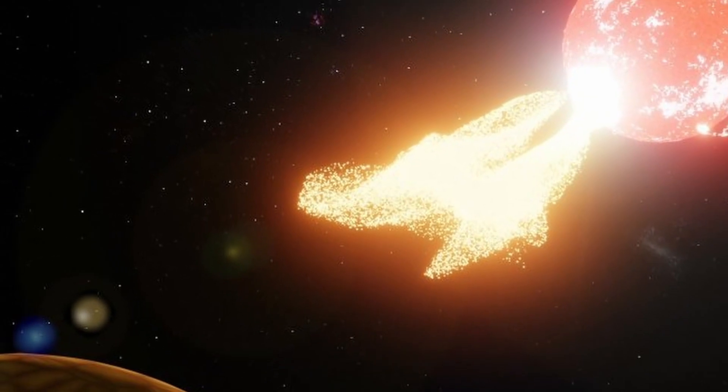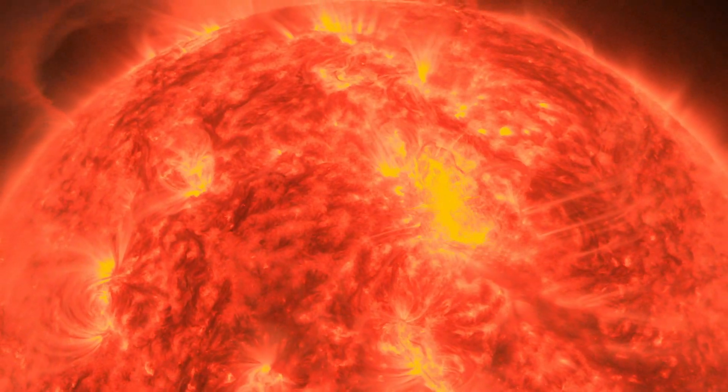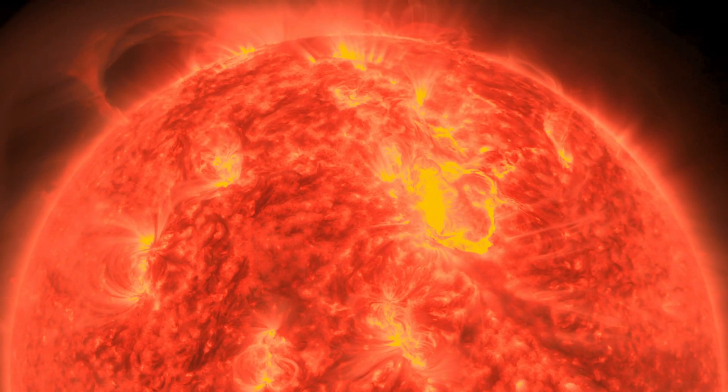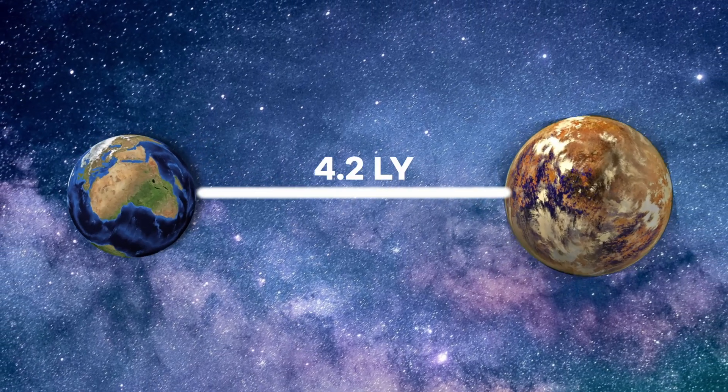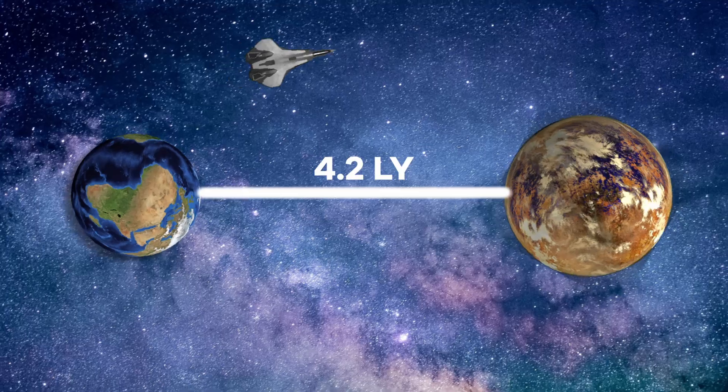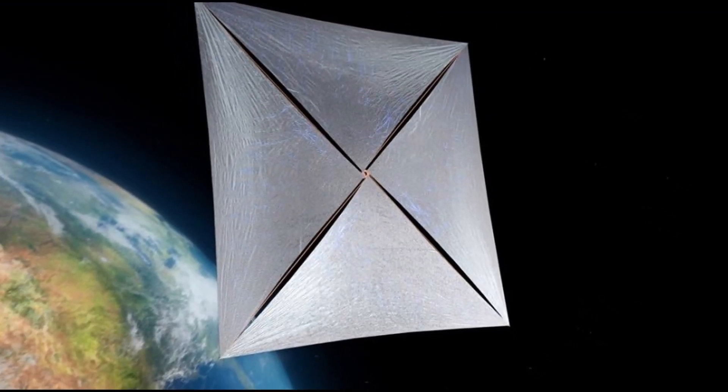Proxima Centauri is a flare star, emitting intense electromagnetic radiation that could potentially strip away an atmosphere from the planet. The proximity of Proxima b to Earth presents an opportunity for robotic space exploration, such as the Breakthrough Starshot Project.